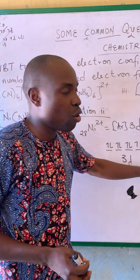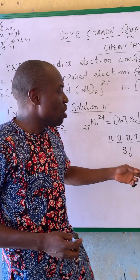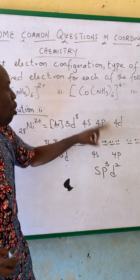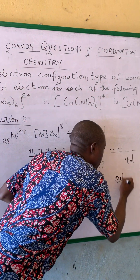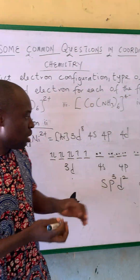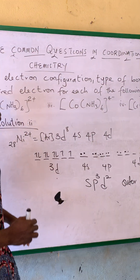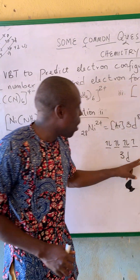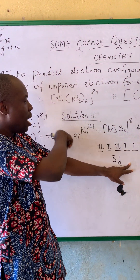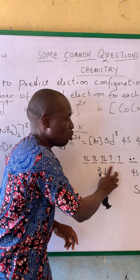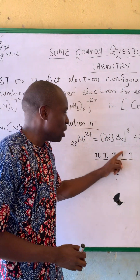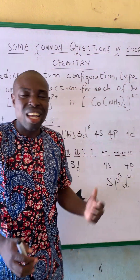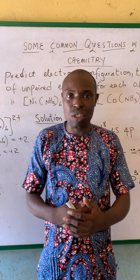This is the electronic configuration. If they are asking for the type of bonding, it gives an outer orbital complex. Why? Because it uses the 4d orbitals. Now, if they ask for the number of unpaired electrons for this complex, it is 2 — you have 2 unpaired electrons. So the answer is: 2 unpaired electrons, an outer orbital complex, and the hybridization is sp³d². This answers the second question.